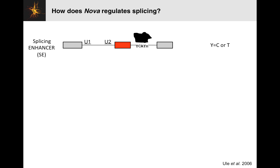How does NOVA regulate splicing? If this is our transcript, U1 and U2 are just parts of the splice zone. If this is the exon that's being regulated, NOVA is going to bind near the exon and basically influence how the region is spliced. It binds to motifs of YCAY, where Y is either a C or a T — so this could be TCAT, TCAC, CCAT, or CCAC, any of the four combinations. NOVA binds to clusters of these motifs.